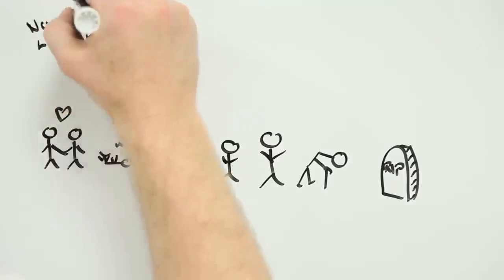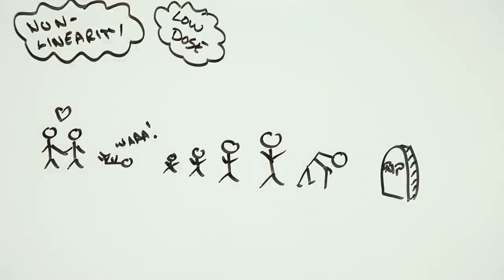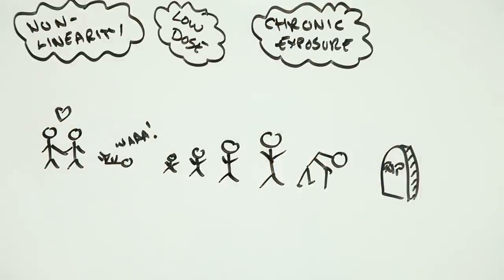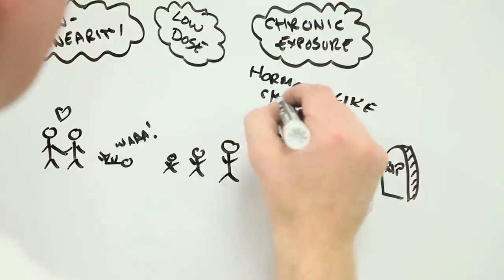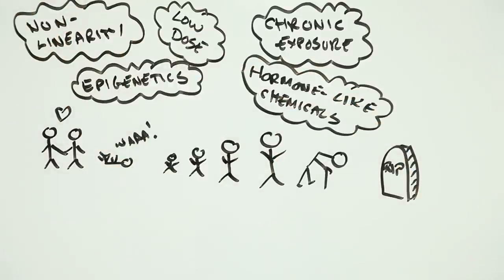Some of the most intriguing areas emerging in risk science involve the complex ways our bodies and our environment interact with each other, and the ways these interactions affect our health.